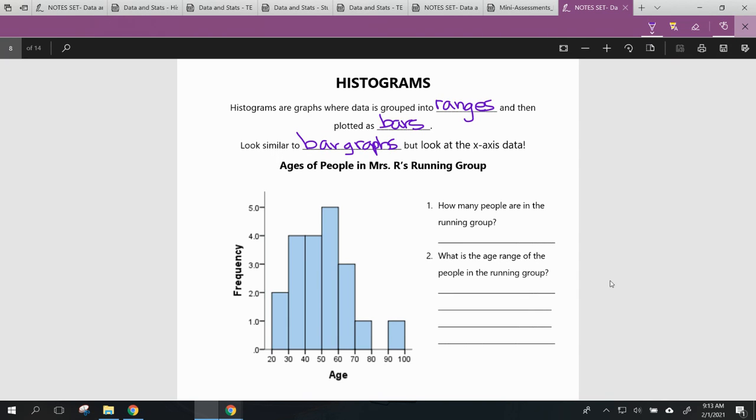But look at the data on the x-axis. If we take a peek, what we shared earlier is that our data is grouped into ranges and then actually plotted on the graph. So if we take a peek down here, we've got ages of people in Miss R's running group.